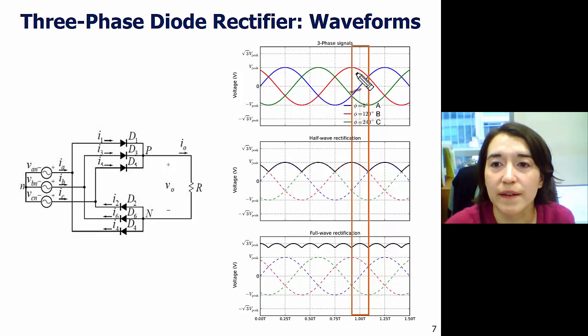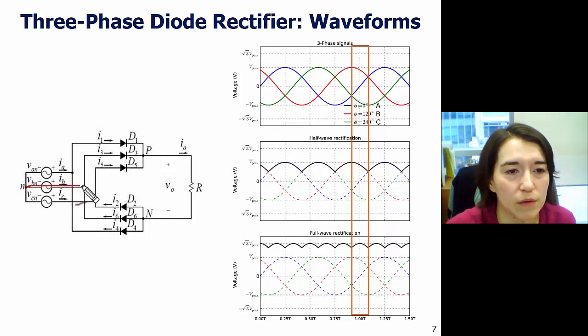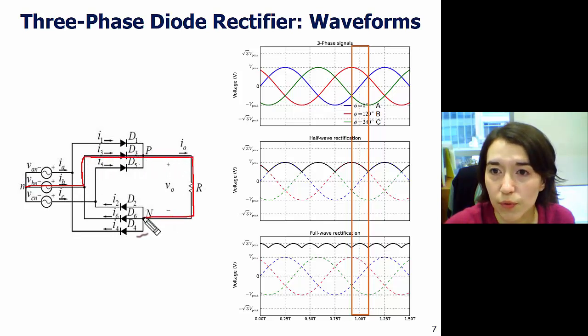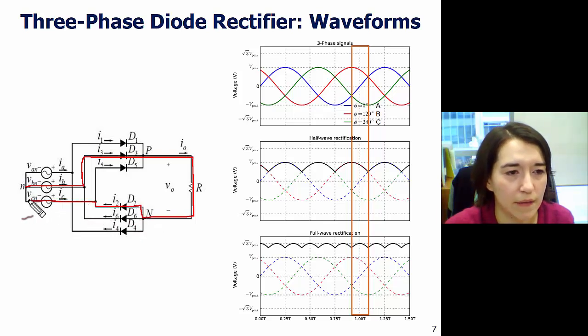Here again, B is the highest, but this time C is the lowest. So, B is the highest. Current's going to go through here. Go through D3 again. And then, we're going to go through to C being the lowest. One, two, A, B, C, which is here. So, diode two, and go through here, and then come out here. So, current flow goes this way.